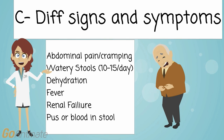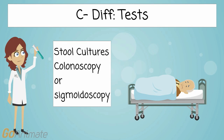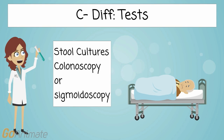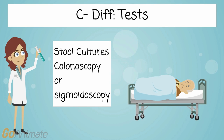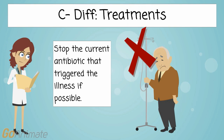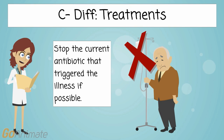Additional signs and symptoms include fever, renal failure, and pus or blood in the stool. Tests done to diagnose C-diff include stool cultures — keep in mind these can take several days to grow — as well as a colonoscopy or sigmoidoscopy.